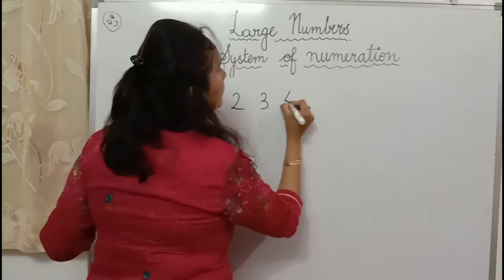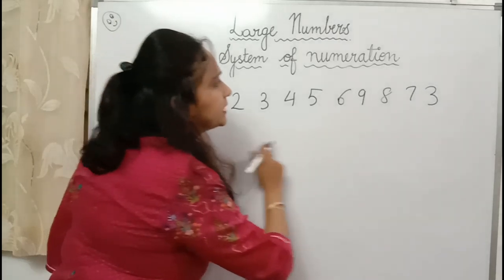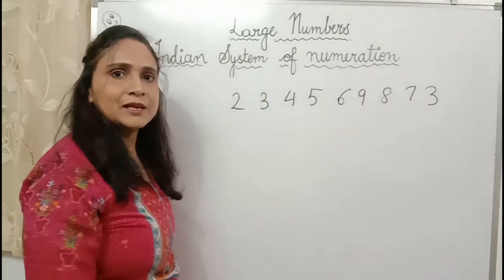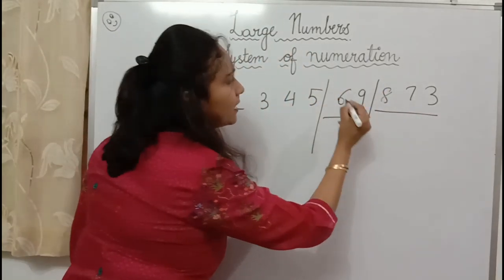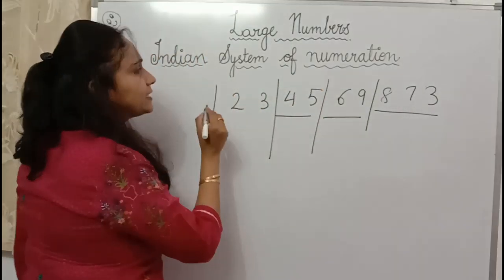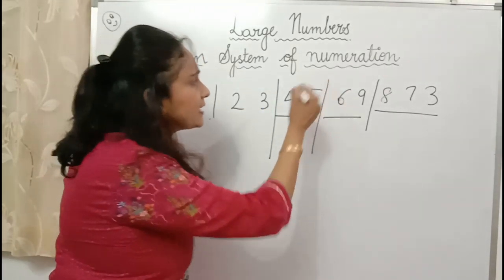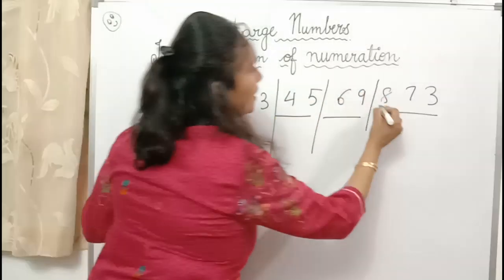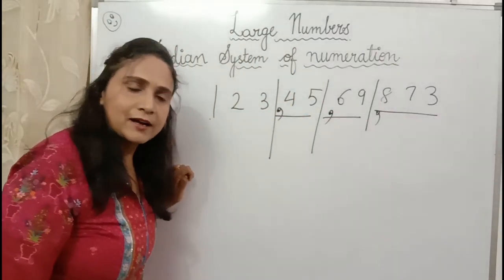Let's see — if I have a big large number like 2, 3, 4, 5, 6, 9, 8, 7, 3 — this is like a big joint family. In this family we have small families: one is my family, the other one is my uncle's family, next is my aunt's family, and this is my grandparents' family. The way different families are segregated through rooms, we segregate this large number through commas.